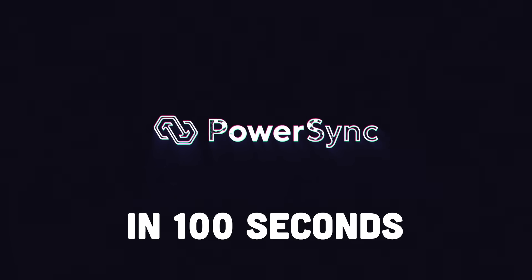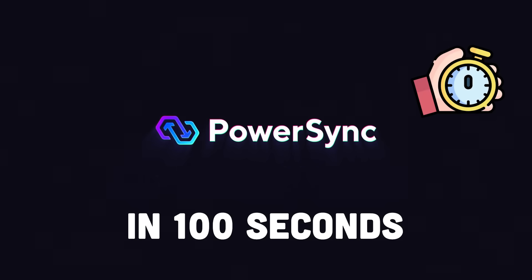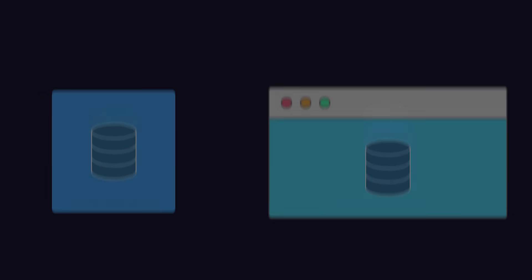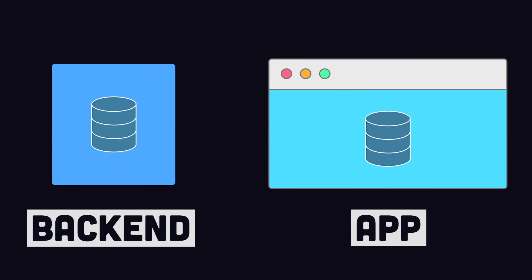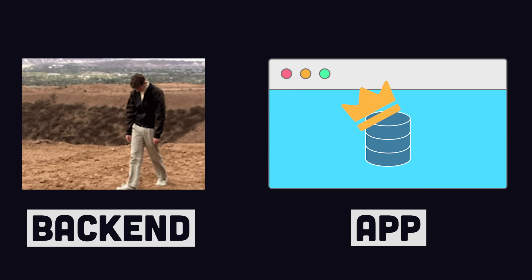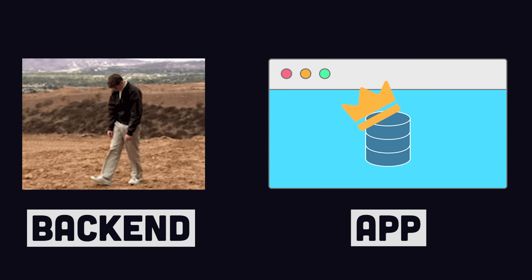This is PowerSync in 100 seconds. PowerSync is a system designed to simplify local-first software, where apps work primarily with a local database instead of a database on a server, which is at the mercy of network latency.